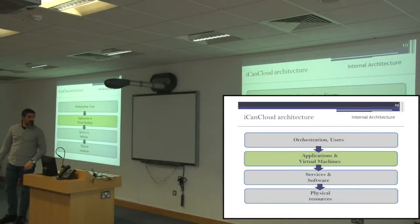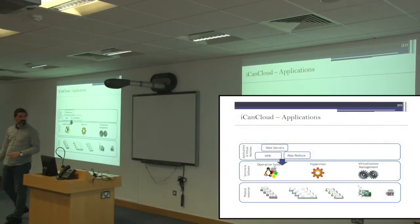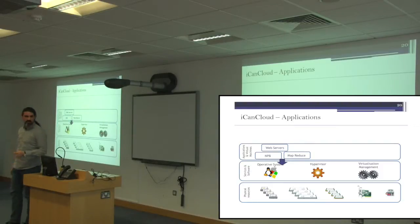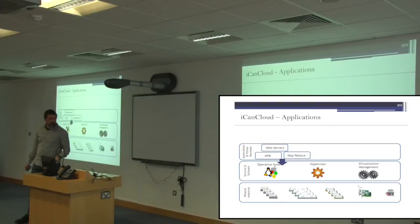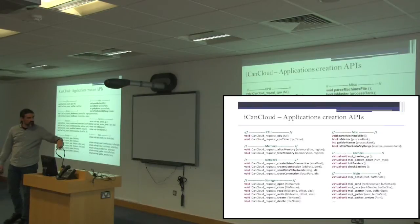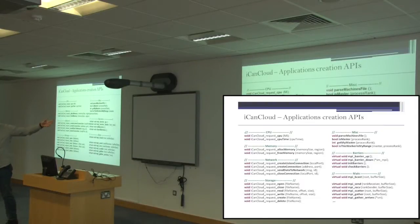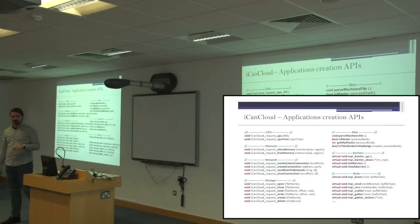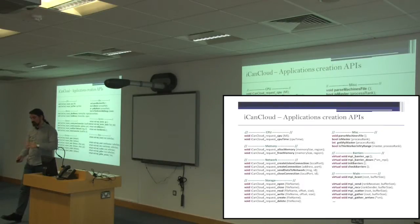The third block is applications and virtual machines. There are different types of applications implemented within iCanCloud: web servers, the NAS Parallel Benchmark, map-reduce, and others for networks. Users can implement different types of applications using Linux-like APIs — for example, to request compute from the CPU, request memory, create files, or create connections. This gives users the ability to create their own application models.